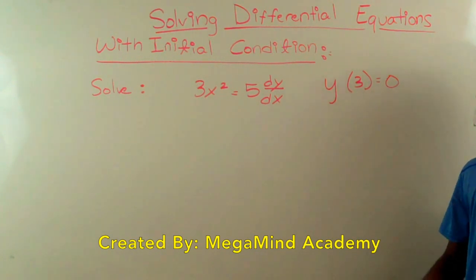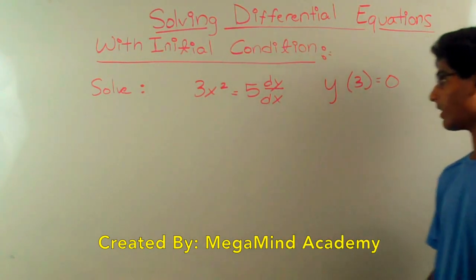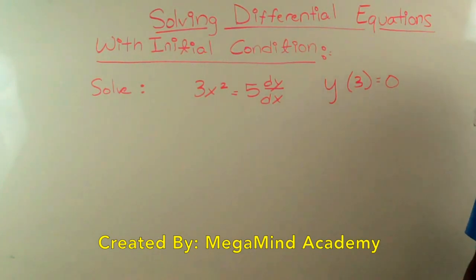Let's say we have to solve the differential equation 3x squared is equal to 5 dy/dx and we're given the initial condition y of 3 is equal to 0.